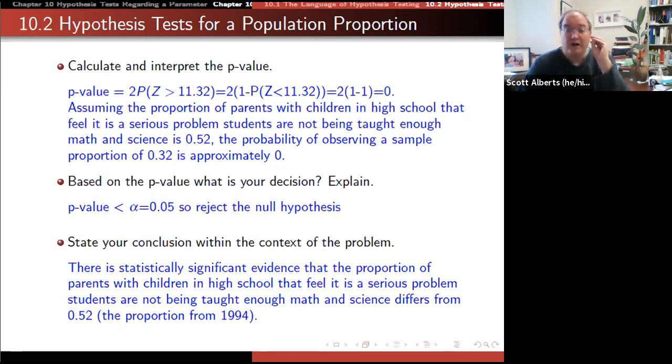Our sentence is: there's statistically significant evidence that the proportion of parents who think their high schools don't teach enough STEM has changed. It's very different than it was in 1994. That's the assumption of our hypothesis - showing whether our data is in line with our hypothesis, or it's so different that we have to conclude something else is going on.